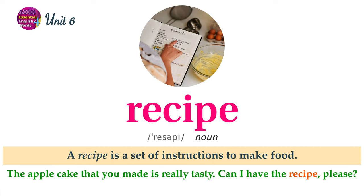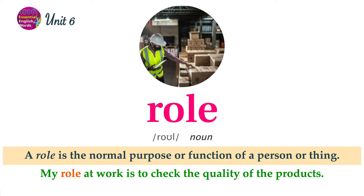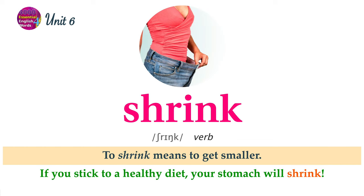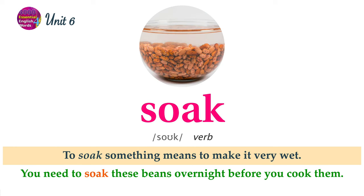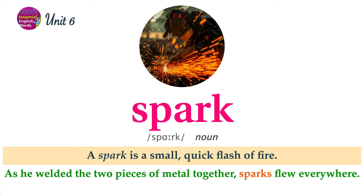A recipe is a set of instructions to make food. The apple cake that you made is really tasty. Can I have the recipe, please? A role is the normal purpose or function of a person or thing. My role at work is to check the quality of the products. To shrink means to get smaller. If you stick to a healthy diet, your stomach will shrink. To soak something means to make it very wet. You need to soak these beans overnight before you cook them. A spark is a small, quick flash of fire. As you welded the two pieces of metal together, sparks flew everywhere.